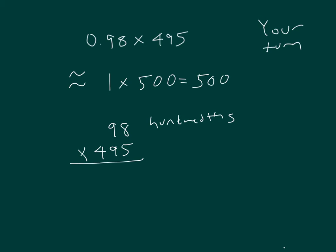5 times 8 is 40, 0, regroup of 4. 5 times 9 is 45, plus 4 is 49. Place a 0. 9 times 8 is 72, 2, regroup of 7. 9 times 9 is 81, plus 7 is 88. Place two zeros.